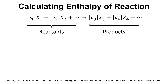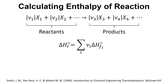If we want to calculate the enthalpy of reaction, we can use this mathematical equation: delta Hr, the enthalpy change of reaction, equals the sum of the stoichiometric coefficient multiplied by the delta H of formation. You do that for each component.